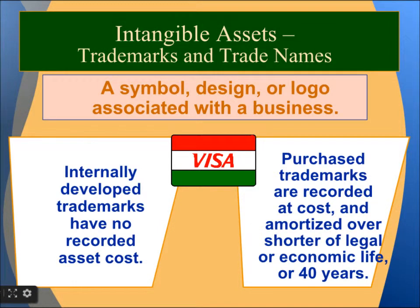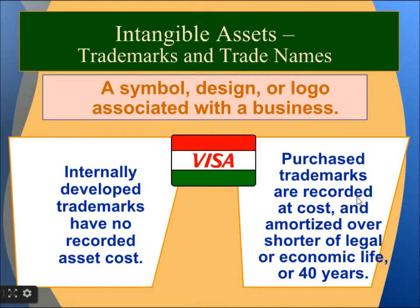Trademarks and Trade Names are a symbol, design, or logo associated with a business — for example, Visa. Internally developed trademarks have no recorded asset cost. Purchased trademarks are recorded at cost and amortized over the shorter of legal or economic life, or 40 years.